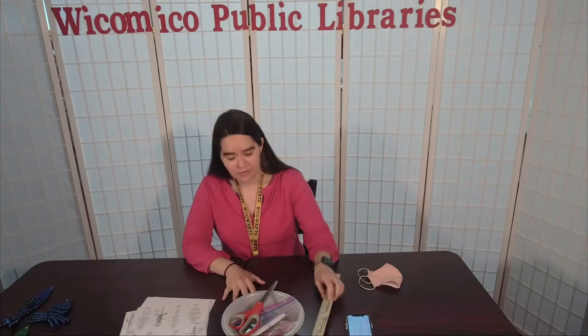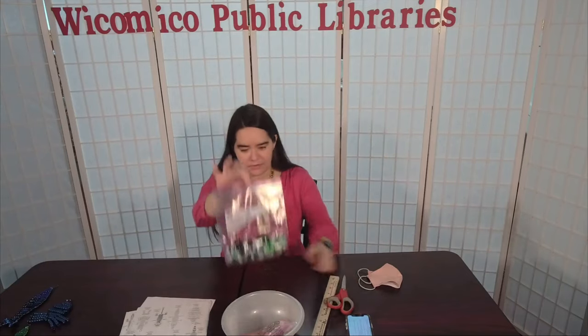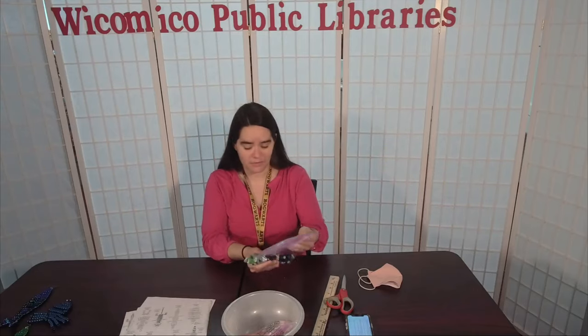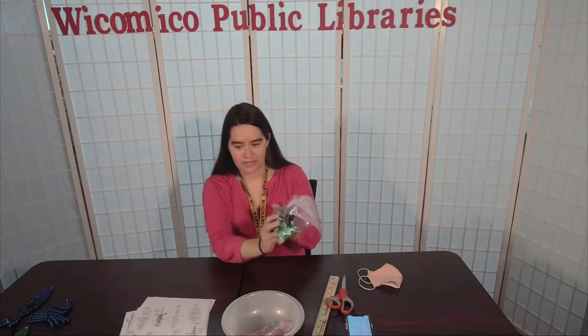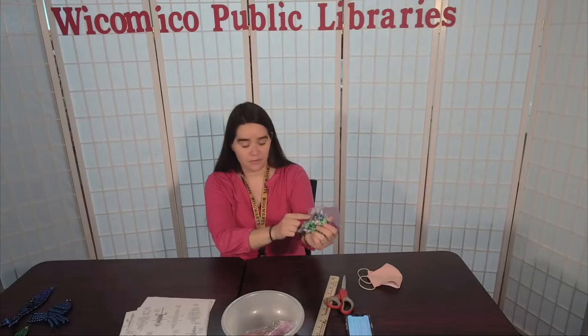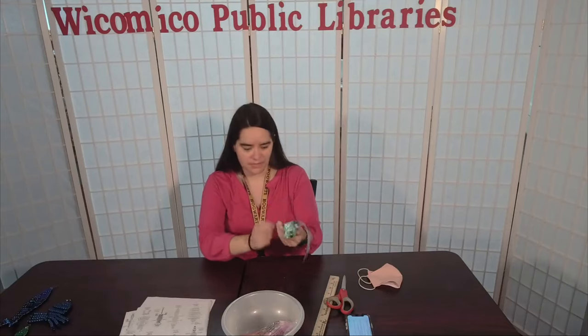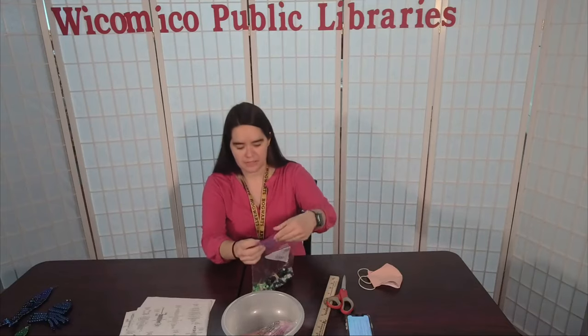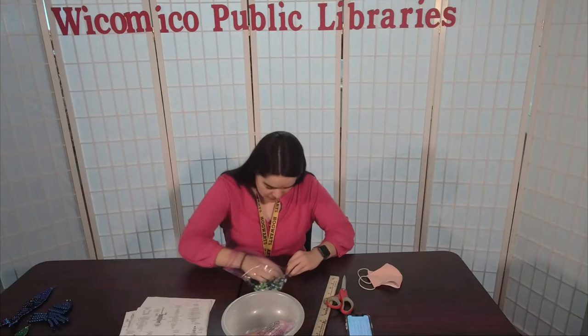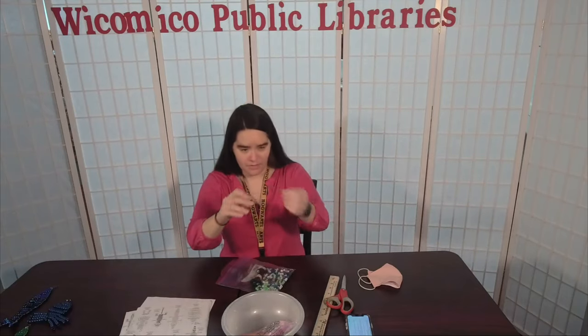If you got a bag from your take and make, you should have it looks a little bit like this. There will be paper instructions included so you can follow along with that as well. Each kit should have a variety of different colored beads, a length of cord which you can cut to whichever length you need, and there should be two keychain attachments in there as well.